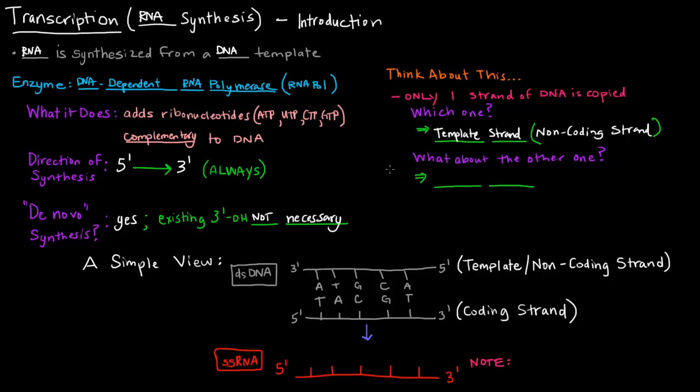The other strand is the coding strand. If this one is the non-coding strand, this one must be the coding strand. Because DNA, of course, is double-stranded. The coding strand is also called the sense strand. It makes sense. So what does that actually mean? How does that work?